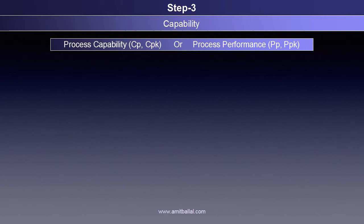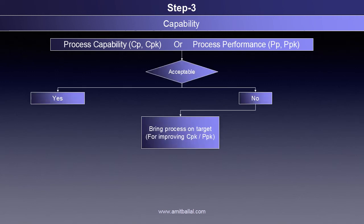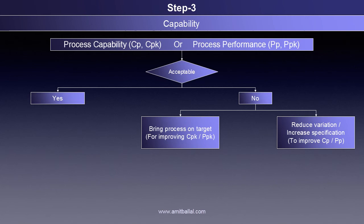If the process is stable and normal, process capability — that is CP and CPK — or process performance — that is PP and PPK — can be calculated to check how the process performs in comparison to specifications, that is tolerance. If the process is not capable or not performing well in comparison to specifications, the first step should be to bring the process on target, that is the specification center — not nominal in every case — so that the process will have fewer out-of-specification parts. The next step can be to reduce variation or increase the specification range, that is tolerance.